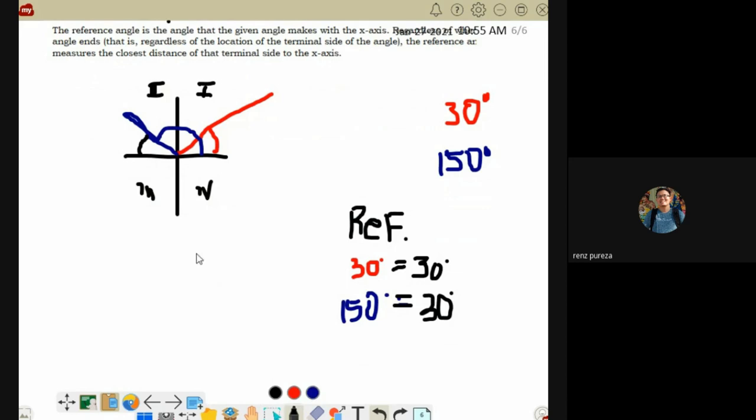Why did it become 30? Because 180 minus 150 is 30. How about for the angle in quadrant three? For quadrant three, it's written in the module.